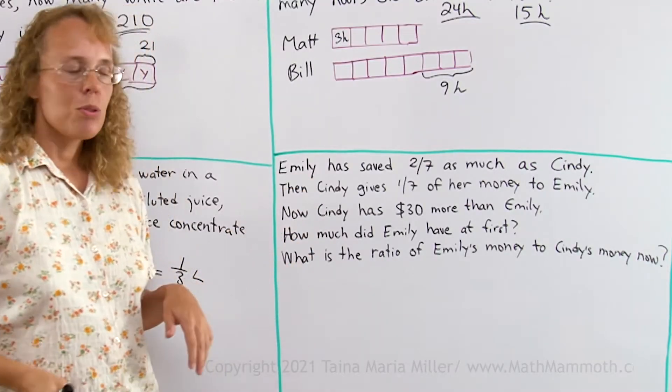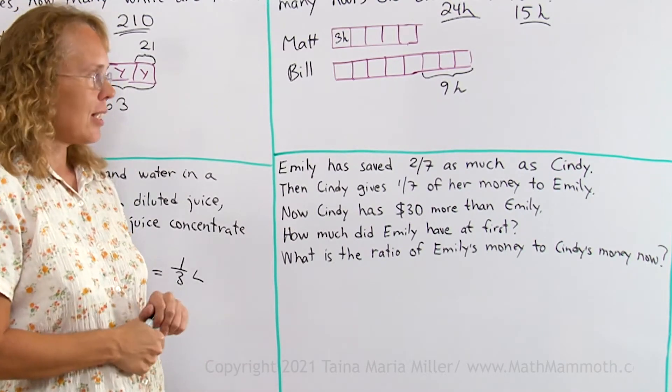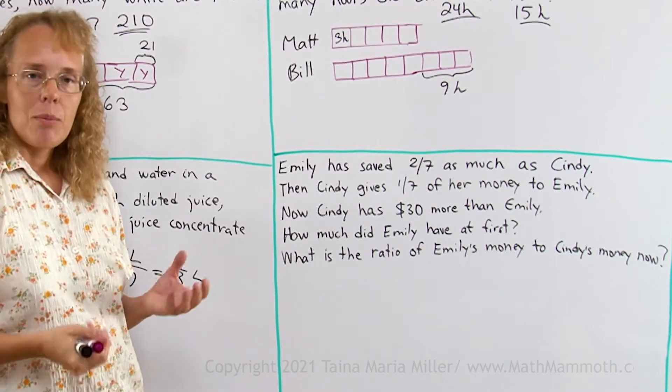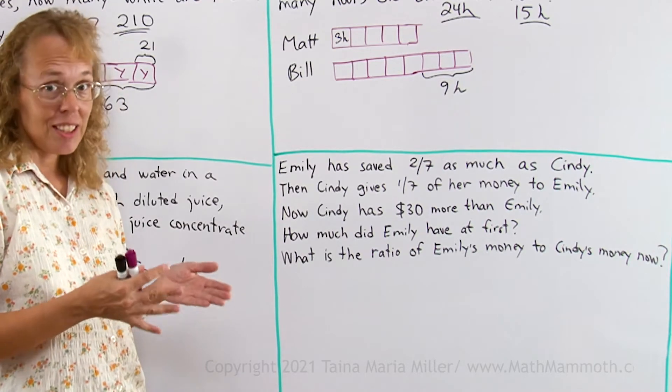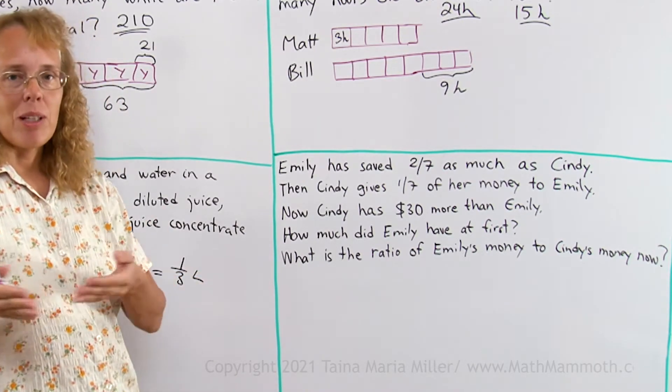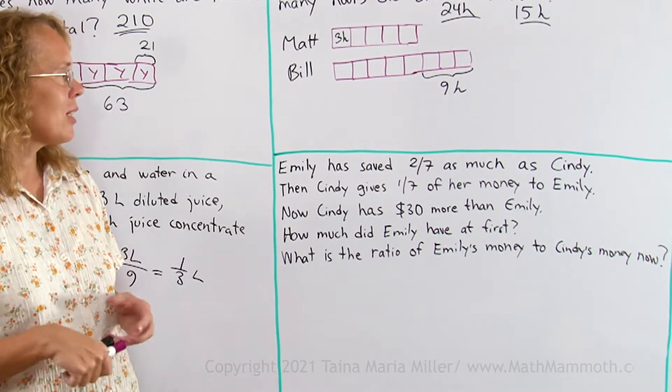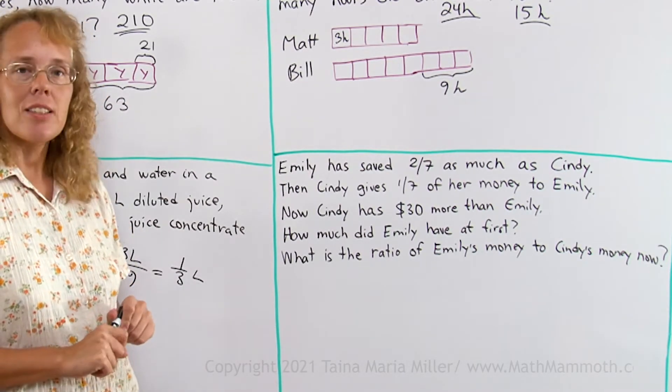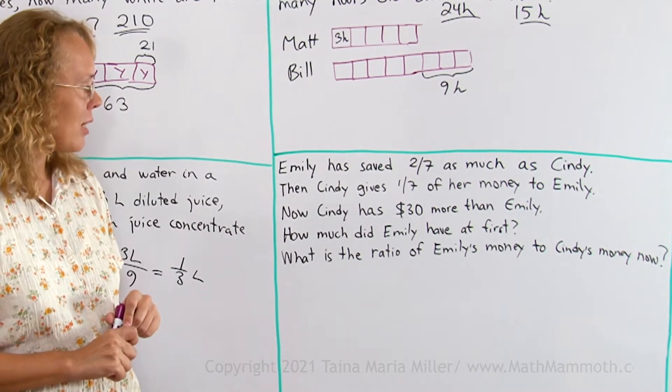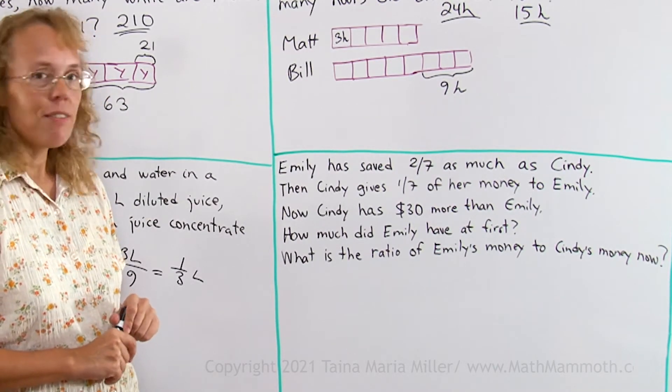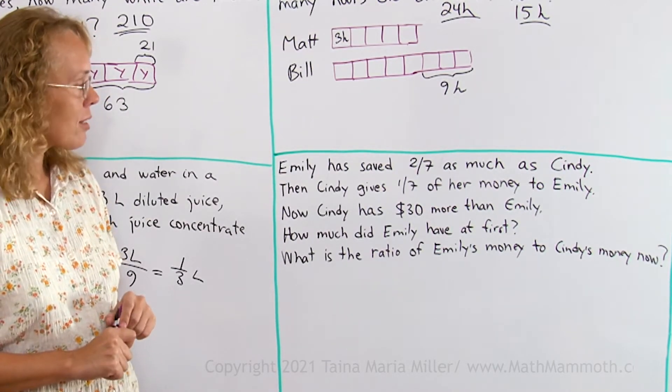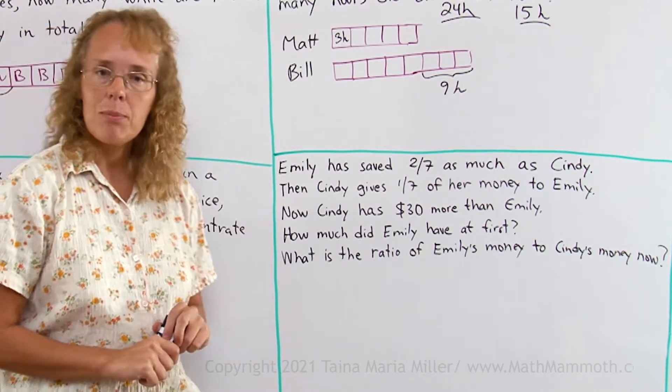Emily has saved 2 sevenths as much as Cindy. Emily has saved not as much as Cindy, that's just 2 sevenths of the amount that Cindy has saved. Then Cindy gives 1 seventh of her money to Emily. Now Cindy has 30 dollars more than Emily. How much did Emily have at first? And what is the ratio of Emily's money to Cindy's money now?